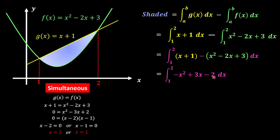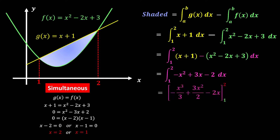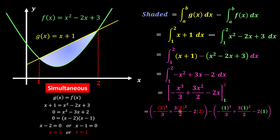Now we carry on with the integration — the power increases by 1 divided by the new power, plus 3x increases by 1 to give 3x squared over 2, minus the constant term which becomes 2x. Everything has the boundary of 1 to 2. After that, we substitute the upper limit minus the lower limit. Computing with a calculator, we get a value of 1 over 6 units squared, which is our area bounded by the curve and the line.